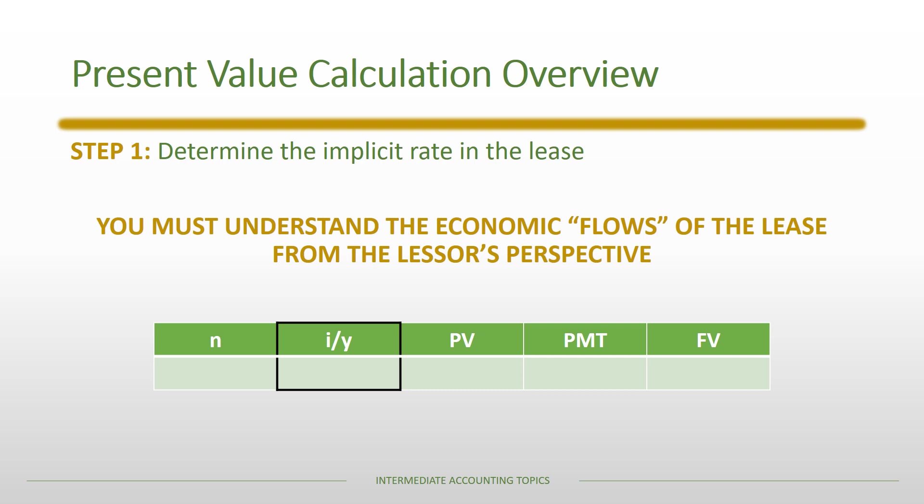When you think about your TVM calculator there are five buttons displayed across the screen. We're focused on the implicit rate, which would be a discount rate calculation, so we have to use information from the problem to fill in the other four pieces of this puzzle and then calculate the discount rate or the implicit rate in the lease.